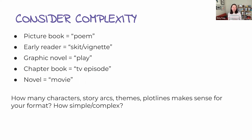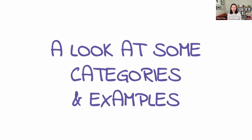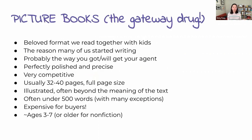So when you're writing, think about how many characters, story arcs, themes, and plot lines make sense for your format — how simple or complex should it be? Everything I wrote in the first three years started off as a picture book, and many of them turned into something else. I'm going to talk about why some of them turned into the categories they did.